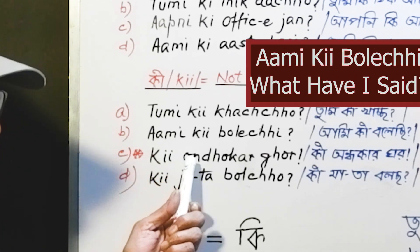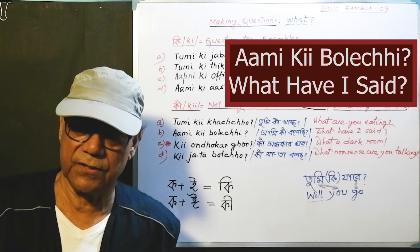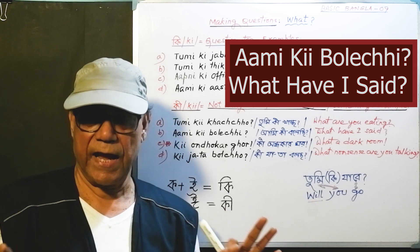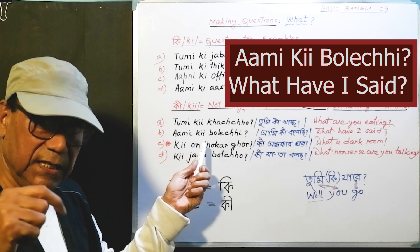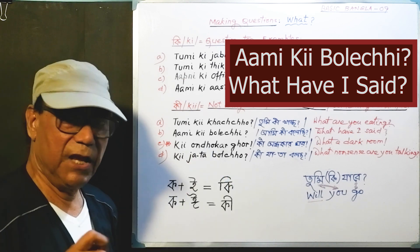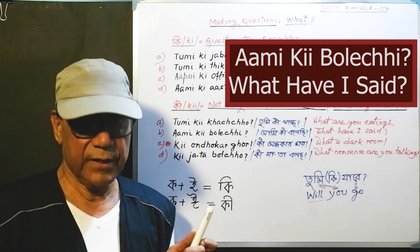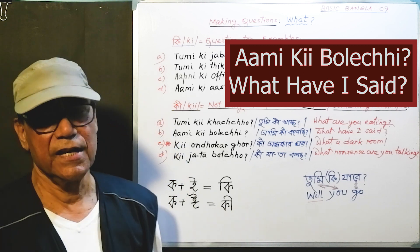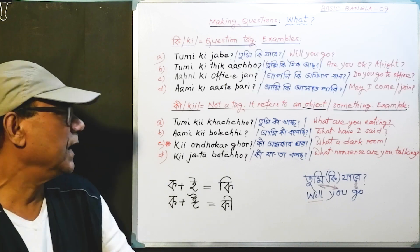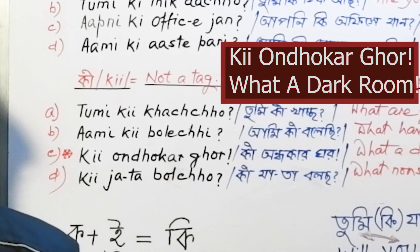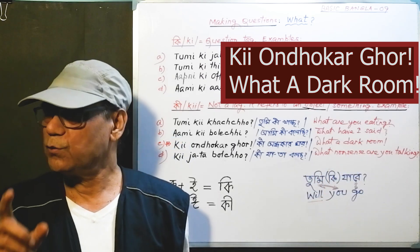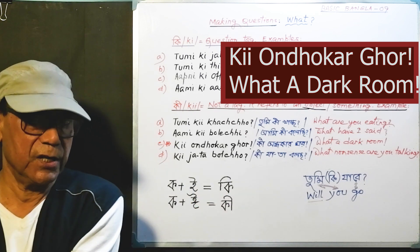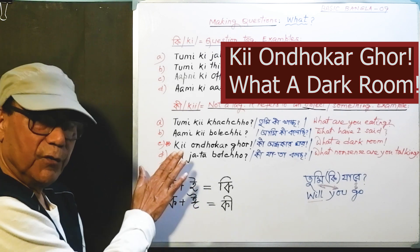Second example: 'ami ki bolachi?' — 'what have I said?' And the answer would be something like 'you have said that Bengali is a nice language.' Now, the stressed ki can also convey a surprise element, as in 'ki andhaar ghor!' meaning 'what a dark room!' — but that is not a question. We will take that item later.